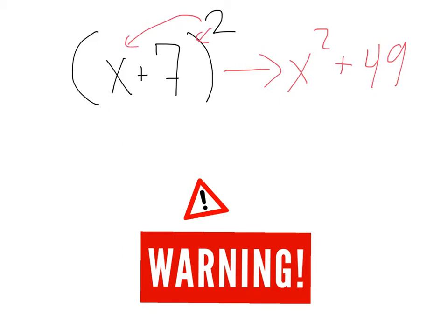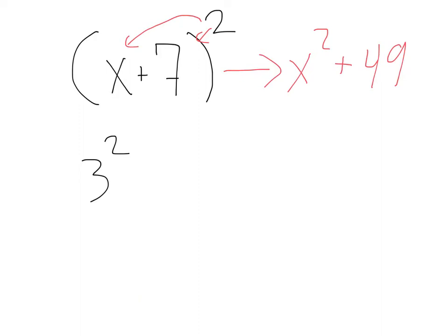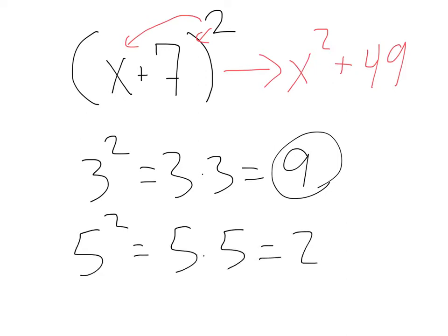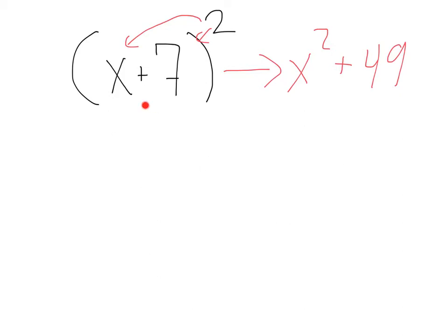But, let's think for a second of what it means to square something. If I had 3 squared, you'd say that's 3 times 3, or 9. If I had 5 squared, you'd say that's 5 times 5, or 25. So, if we have x plus 7 squared, that's going to be x plus 7 times x plus 7, right? Because when we square something, we're just multiplying it by itself.